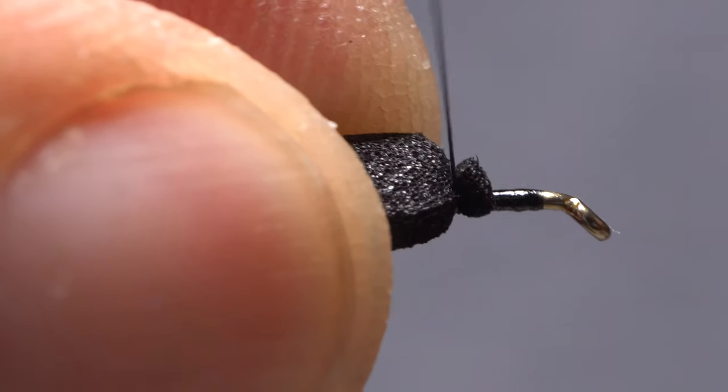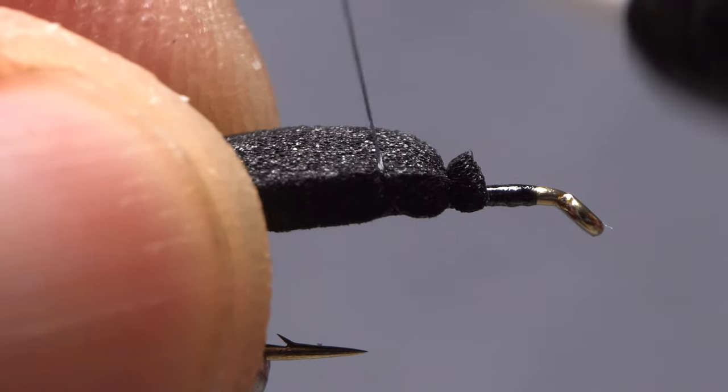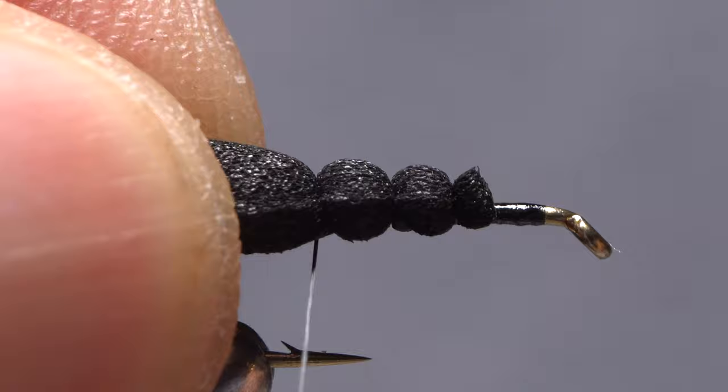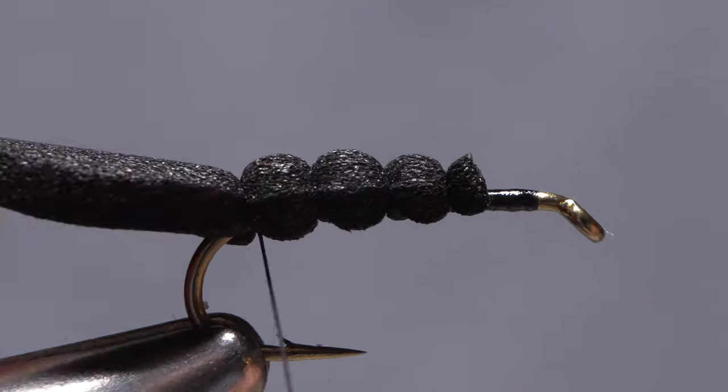Take two tight thread wraps to secure the foam. Angle your thread rearward and cinch it down to create another foam segment. Keep making segments until you reach the start of the hook bend.